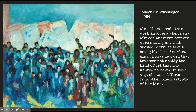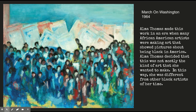This is a painting that doesn't look like the other Alma Thomas paintings, and it's called March on Washington from 1964. Alma Thomas made this work in an era when many African-American artists were making art that showed pictures about being Black in America, and some of that art was political art. Alma Thomas decided that this was not mostly the kind of art that she wanted to make. In this way, she was different from other Black artists of her time.